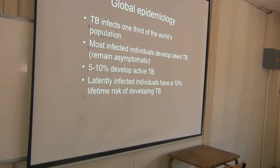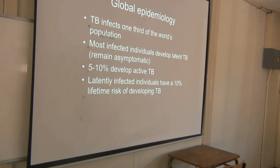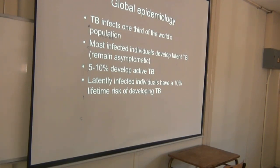You know the difference between active and latent TB. Only 5 to 10% of people with normal immune systems develop active TB, which means you get symptoms and can transmit it. With latent TB you cannot transmit it to other people because it's inside your body. Latently infected individuals have a 10% lifetime risk. However, HIV positive individuals have an extremely high chance of getting active TB.